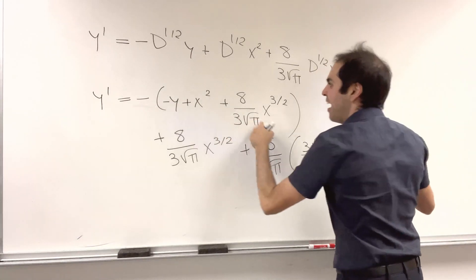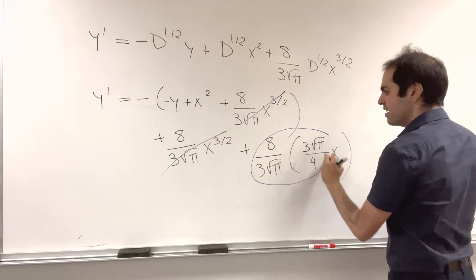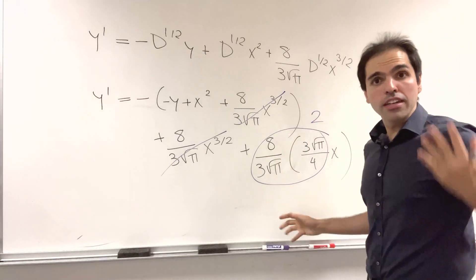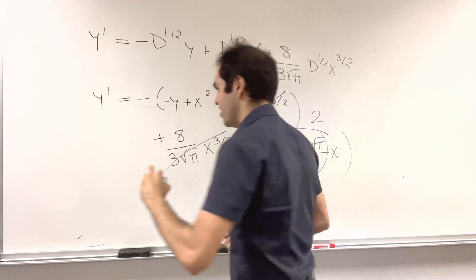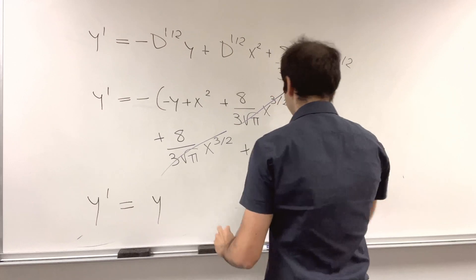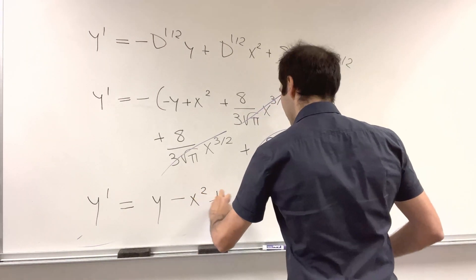So we have minus this term cancels out with this term. And this thing, I believe, is just 2. So in the end, we get a very simple ordinary differential equation, y' equals y, and again, minus x² plus 2x.